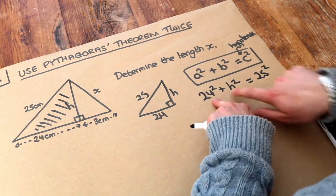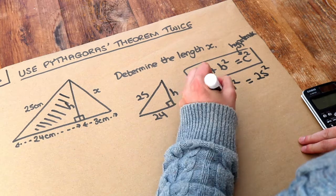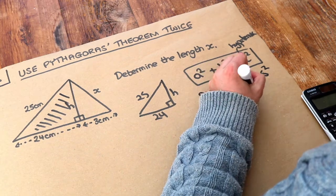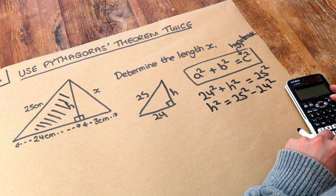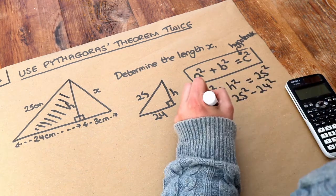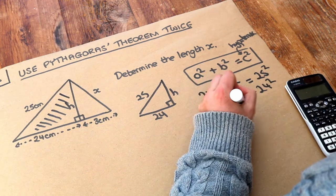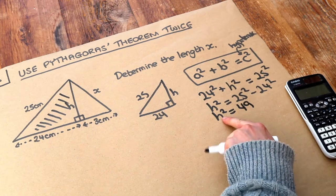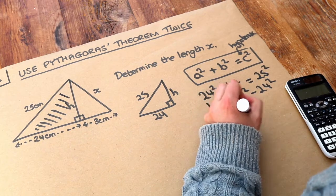Now, if we just subtract 24 squared from both sides, we've got h squared is equal to 25 squared minus 24 squared. Put that into our calculator, and that gives us 49. So if we square root that to just find h, that gives us h equals 7. So we now know that h is equal to 7.